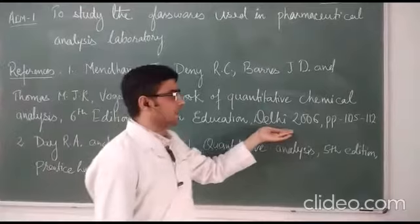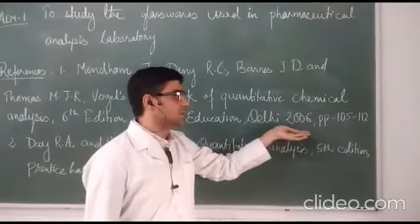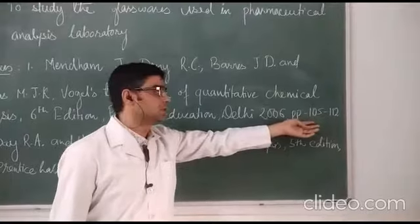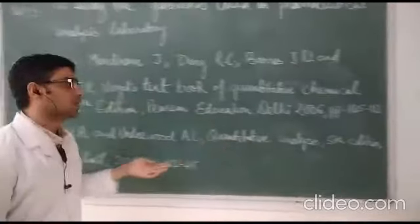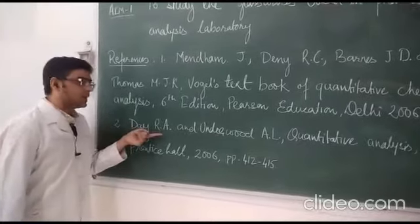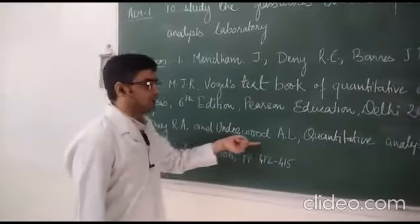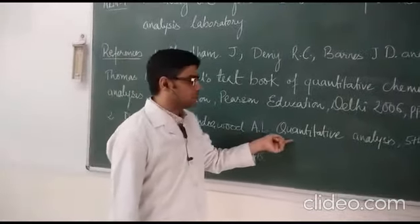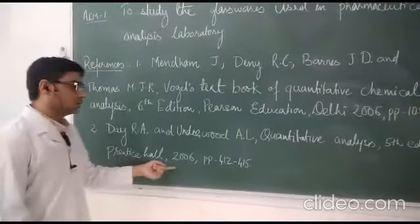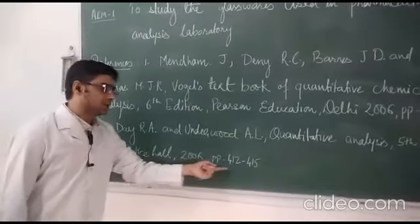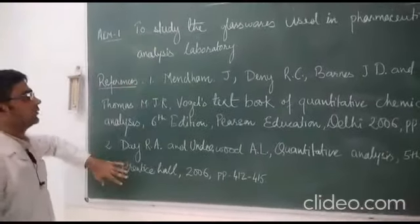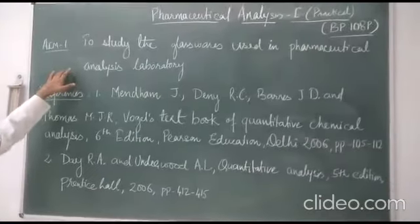The first reference is from the 2006 edition, pages 105 to 103. The second reference authors are J.R.A. and Underwood A.L. The book is titled Quantitative Analysis, fifth edition, 2006, pages 105 to 415. These are the two references from which we are covering the topic of these glasswares.